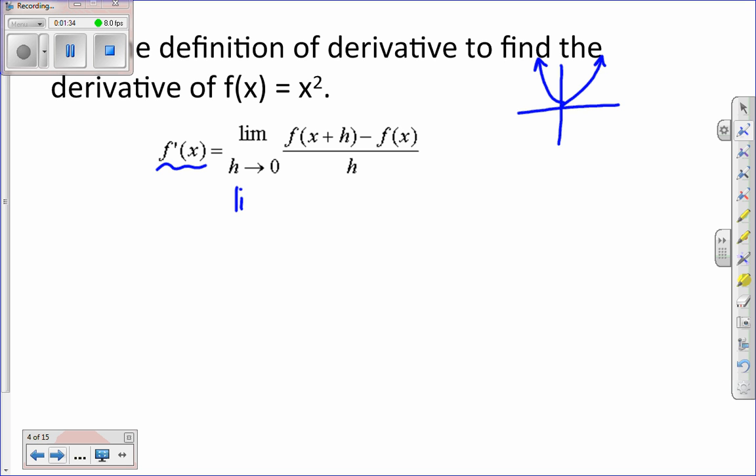So we are going to find the limit as h approaches 0. And so then I'm going to replace x with x plus h. So it's going to be x plus h squared minus f of x, which would be x squared, all over h. And we're going to do our algebra then.